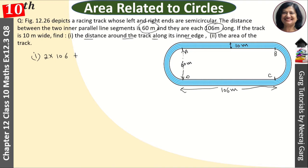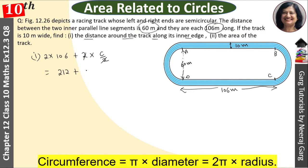This is what, circumference? Semi-circumference. And here also semi-circumference. So twice into semi-circumference, C by 2. This 2 will cancel with 2. So this is twice into 106, so it becomes 212.